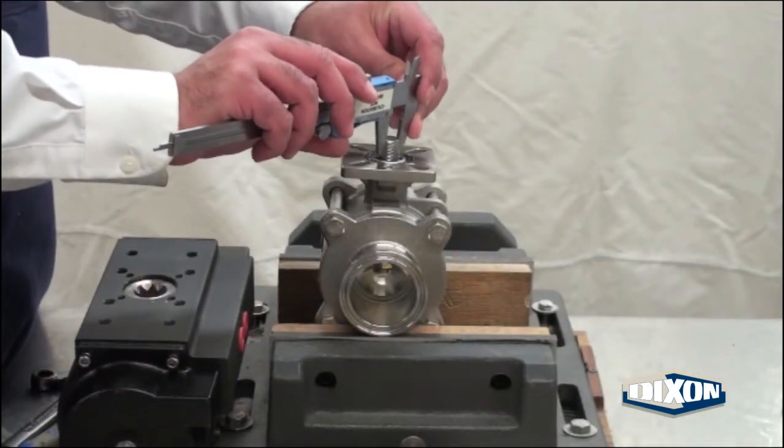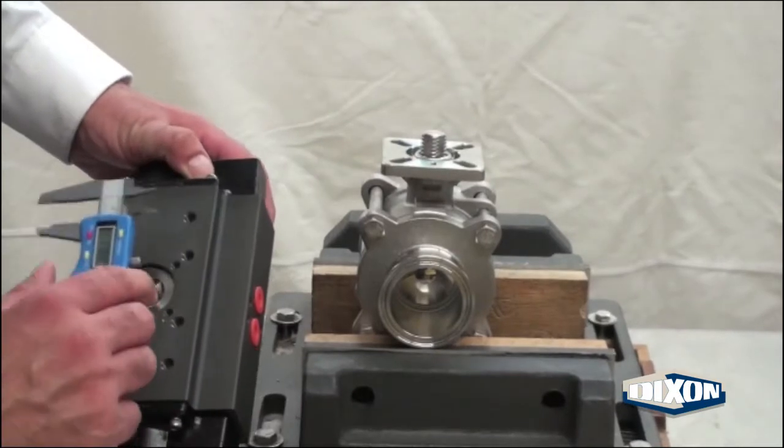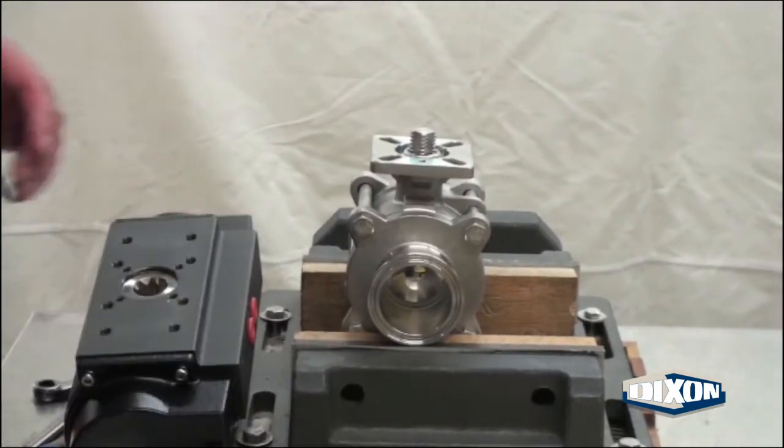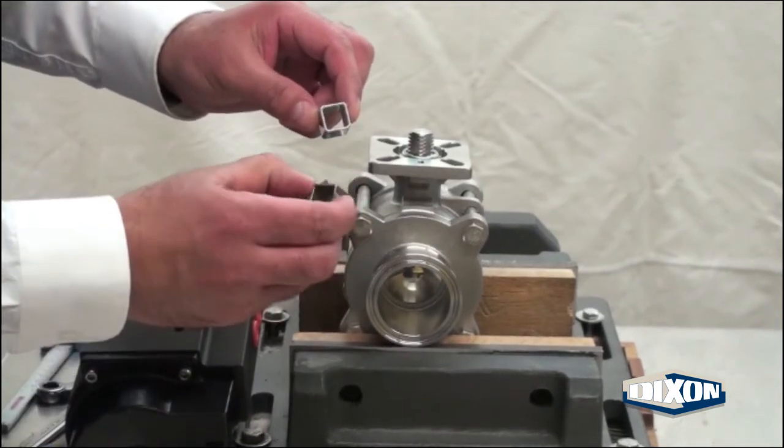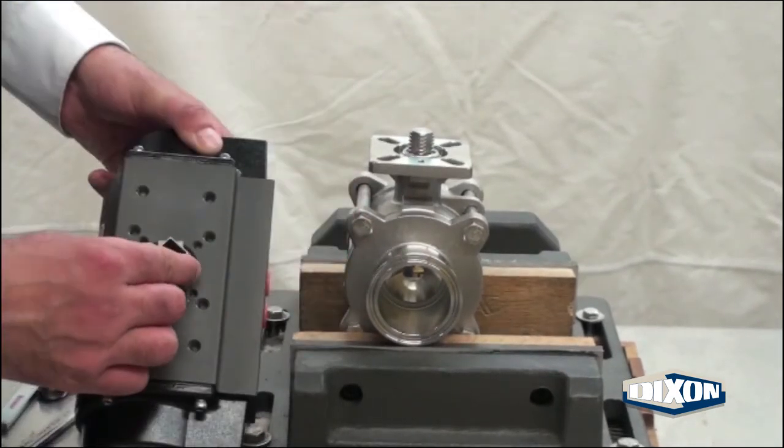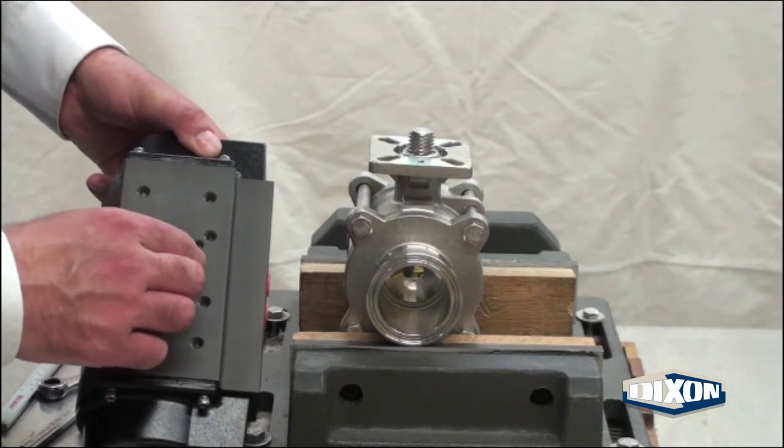Use a caliper to measure the valve stem and the square drive on the actuator. If the stem is smaller, use a square or star sleeve insert. Insert the sleeve into the actuator with the same orientation as the valve stem.